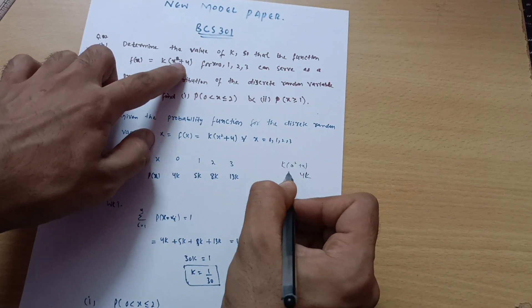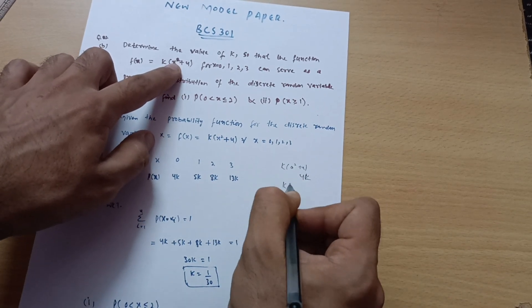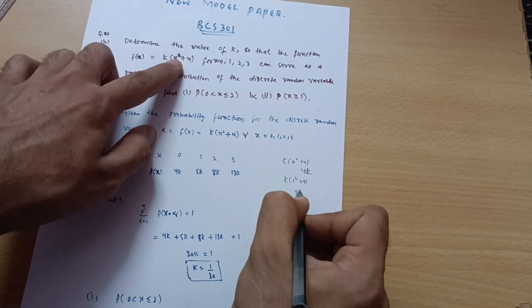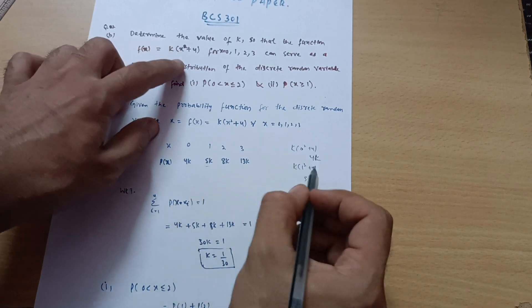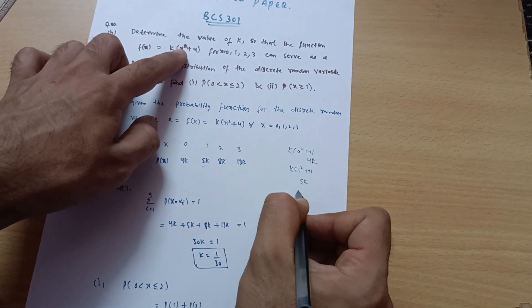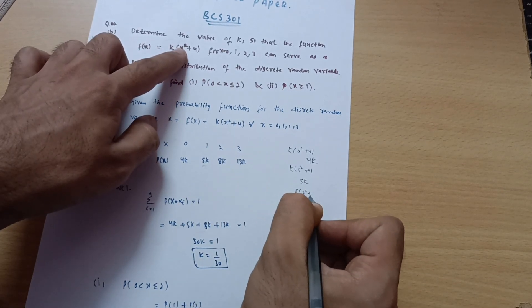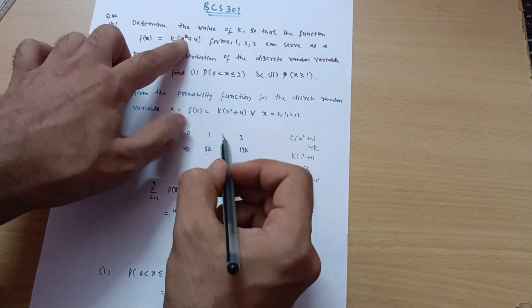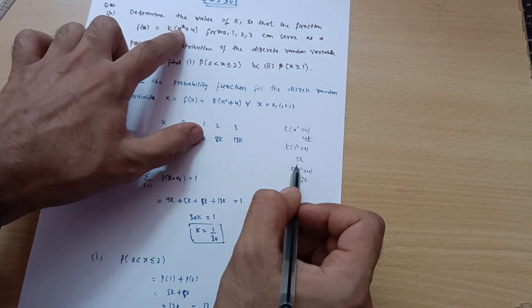Now take the value as 1 in this equation. So k(1² + 4), that is 4 + 1 = 5, so 5k you will get here. Likewise, now take the value as 2. So k(2² + 4), you will get 4 + 4 = 8k.